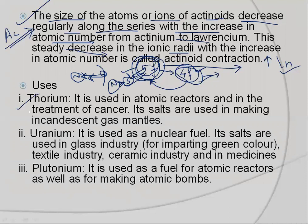Now the uses of actinoids: Thorium is used in atomic reactors and in treatment of cancer; its salt is used in making incandescent gas mantles. Uranium is used as a nuclear fuel; its salts are used in glass industries for imparting green color, and also in textile, ceramic, and medicine industries. Plutonium is used as a fuel for atomic reactors as well as in atomic bombs.